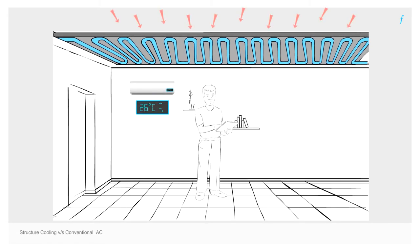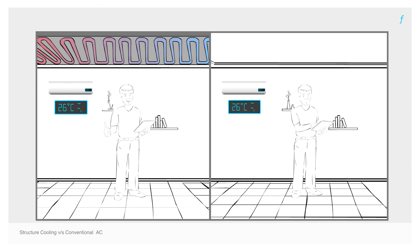In spaces with higher cooling requirements, a combination of structure cooling and a conventional system may be used to achieve the desired cooling effect. When we use a regular air conditioner in a non-structure cooled room, we will need to set the air conditioner at a lower temperature to feel comfortable. This is because of the higher mean radiant temperature.